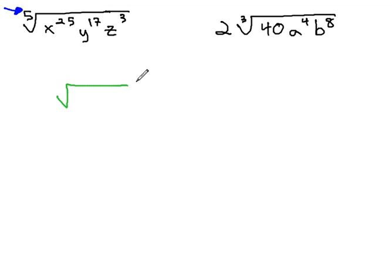If there is a remainder when we divide by the index, that will tell us how many will remain inside the radical. So for example, when we have the 5th root of x to the 25th, y to the 17th, z cubed, we're going to divide each exponent by the index of 5.